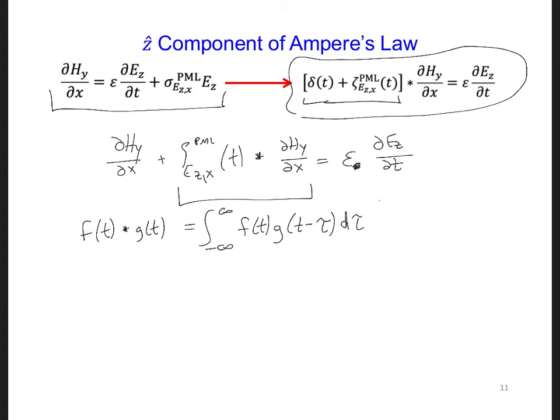So in our case, f is zeta and g is d hy d x. We know that zeta and d hy d x will be zero before time stepping begins, so for negative values of tau. So this means we can truncate this integral to extend from zero to t seconds, the time span of our simulation.